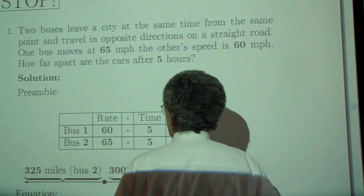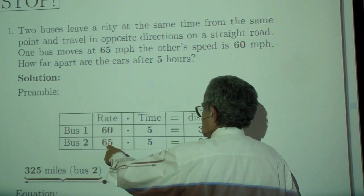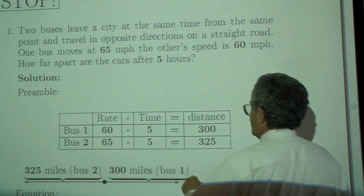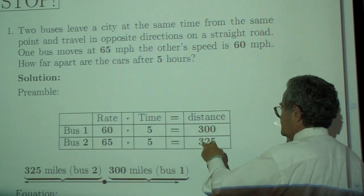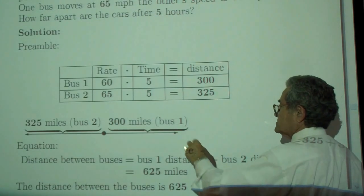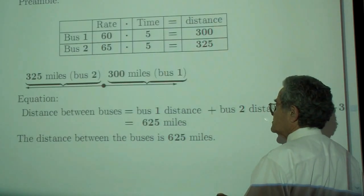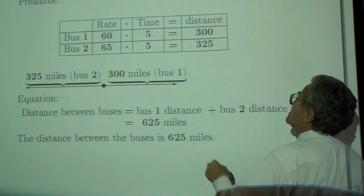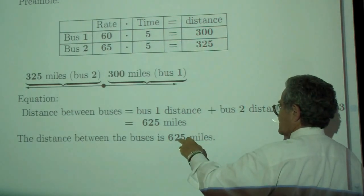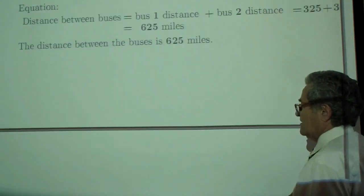Solution to the first problem: 60 miles per hour, 65 miles per hour, 5 hours, distance traveled 300 and 325 miles. The distance between the buses then is 300 plus 325, or 625 miles.